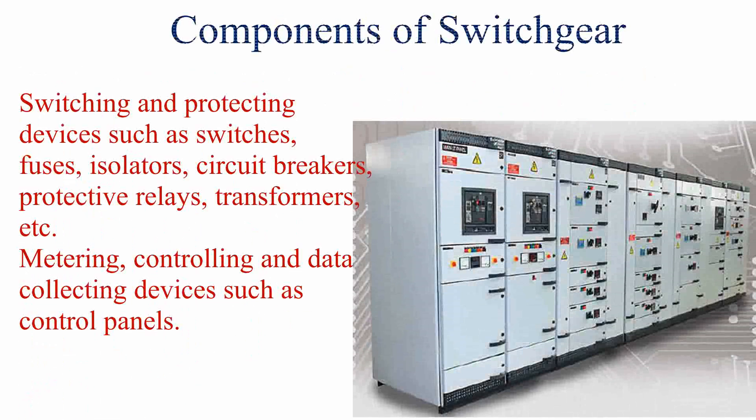It consists of switching devices such as switches, circuit breakers and protecting equipment that use sensing devices to identify the fault current, like protective relays and transformers. Switch gear also includes metering devices such as display of temperature or power consumption, and controlling and data collecting devices like control panels.